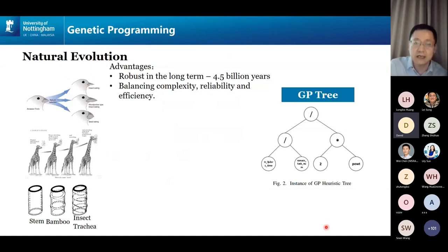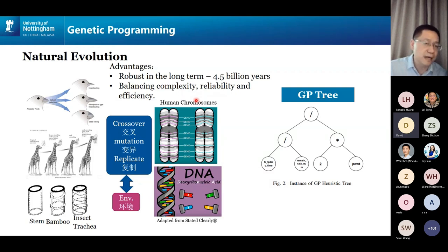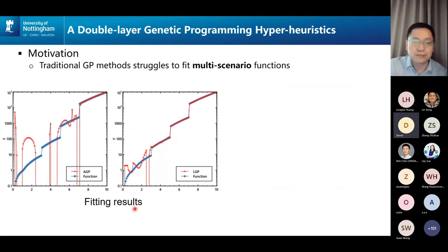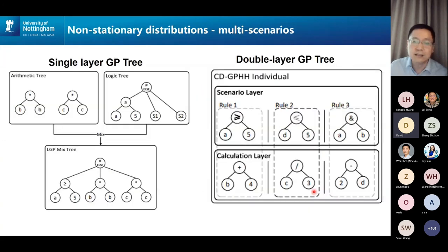First, we use genetic programming — essentially a tree-based decision process based on crossover and mutation. This approach has many advantages: it's usually very robust and achieves a good balance between complexity, reliability, and efficiency. However, we need a good environment to train our policy. Traditional GP does not do very well with multi-scenario functions and also tends to stop converging after a certain number of iterations, so we need to find better ways.